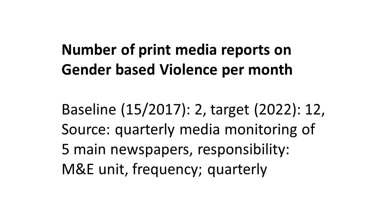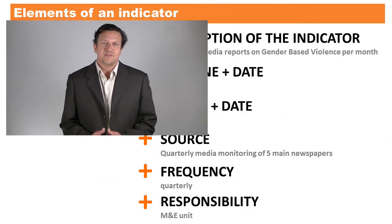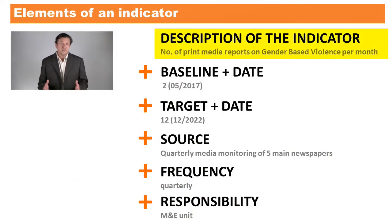Let's take a look at an example of an indicator. While there is no single standard for how an indicator should be written down, this example shows an effective and concise way to do that. We see that this indicator consists of six elements. The first is a description of the indicator — for example, the number of print media reports on gender-based violence per month.